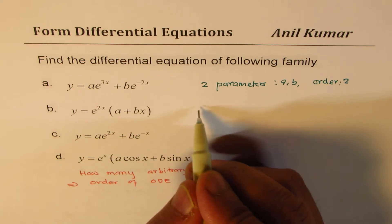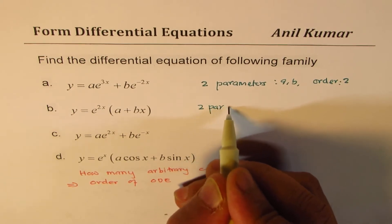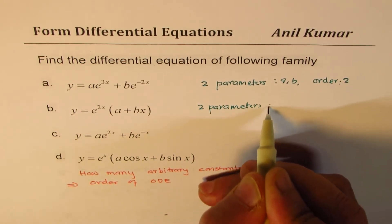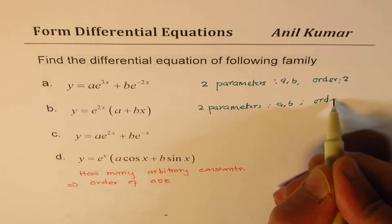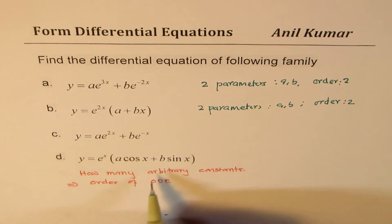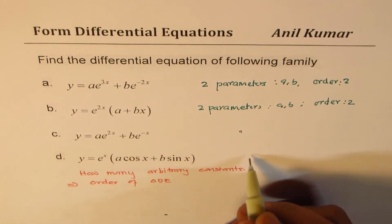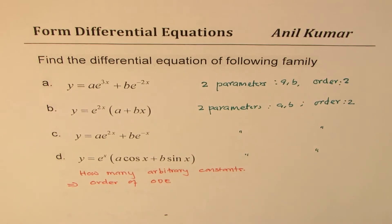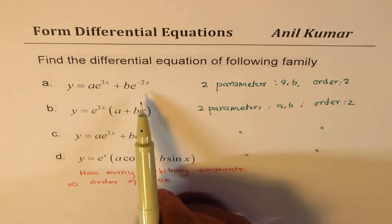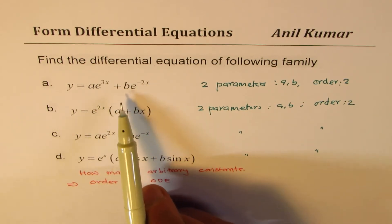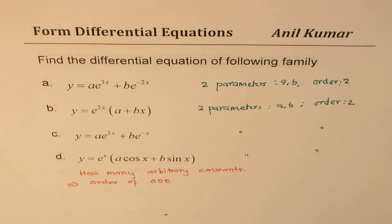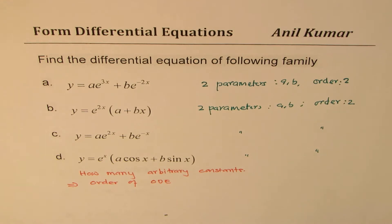In case (b), again there are two parameters a and b, and the order is 2. The same applies to all other equations. To solve such equations, we need to isolate a and b, or get rid of them after taking second derivatives. That's the whole strategy.